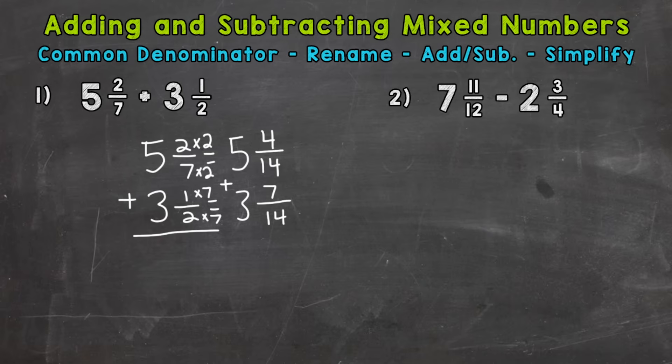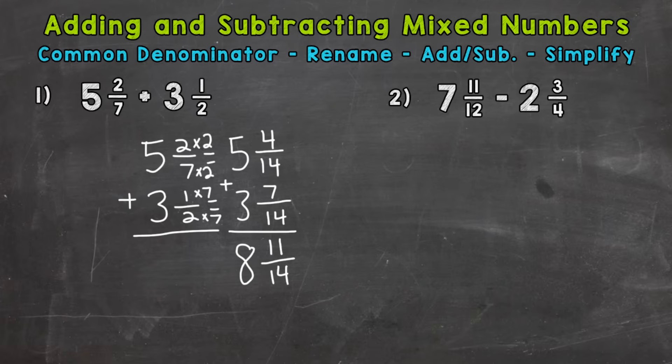And this is addition. So now that we have a common denominator and have renamed, we're able to add. Let's add our fractions first: 4 plus 7 is 11, and this is fourteenths. Then we add our whole numbers: 5 plus 3 is 8. Now check to see if you can simplify the fractional part. Do we have any common factors between 11 and 14? The only common factor is 1, so this is in simplest form. Our final answer is 8 and 11 fourteenths.